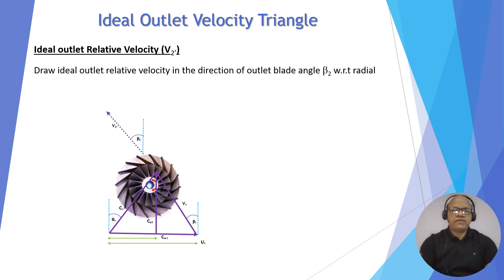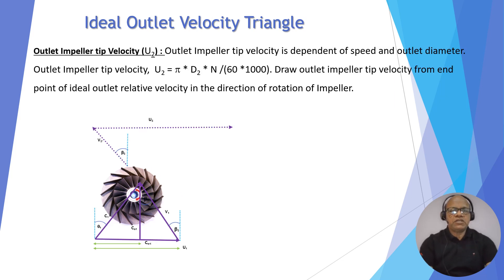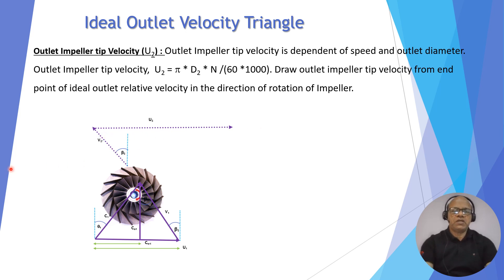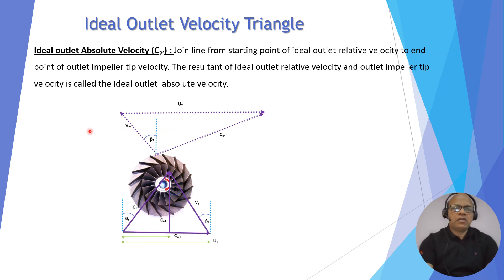Now we need to draw the ideal outlet velocity triangle where slip factor is not considered. Draw the ideal outlet relative velocity V2-dash in the direction of the impeller outlet blade angle beta 2 with respect to radial. The outlet impeller tip velocity U2 = π × D2 × N / (60 × 1000). Draw from the end point of V2-dash in the direction of rotation of the impeller. Then join the starting point of V2-dash and end point of U2 — this gives the ideal outlet absolute velocity C2-dash.